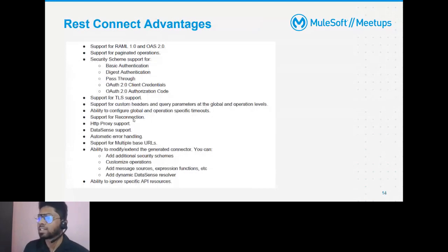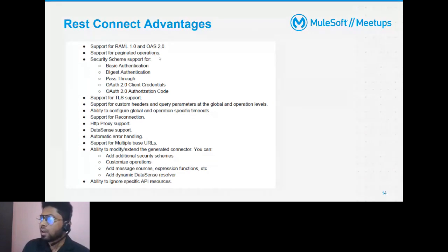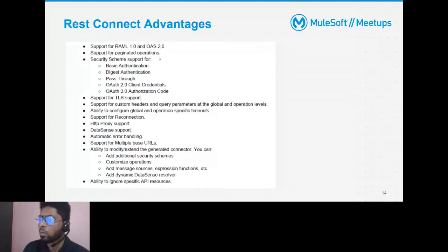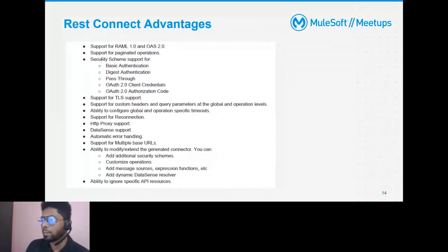The advantages of REST Connect: as the name suggests, it supports both RAML and OAS. It also supports paginated operations — I just need to provide the pagination strategy and the parameters involved. There is also support for all security schemes like basic authentication, pass-through, and all OAuth protocols.